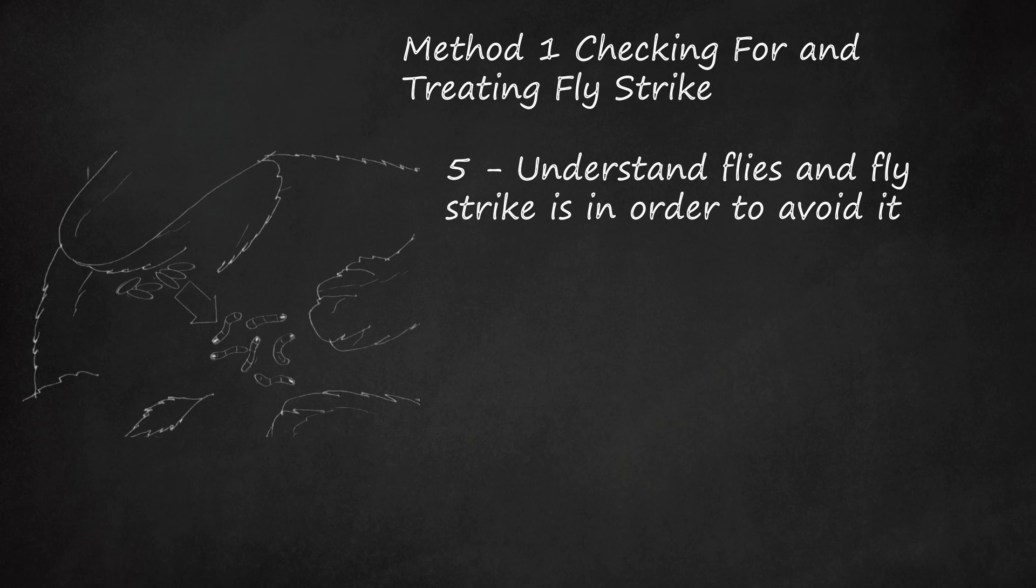The maggots normally eat rotting flesh. What happens with fly strike in rabbits is that the flies lay eggs in live flesh rather than dead carcasses. The eggs hatch in a matter of hours and the hungry maggots eat through live tissue. This is painful for the rabbit, and if the maggots are not spotted quickly the rabbit can quickly go into shock and die.